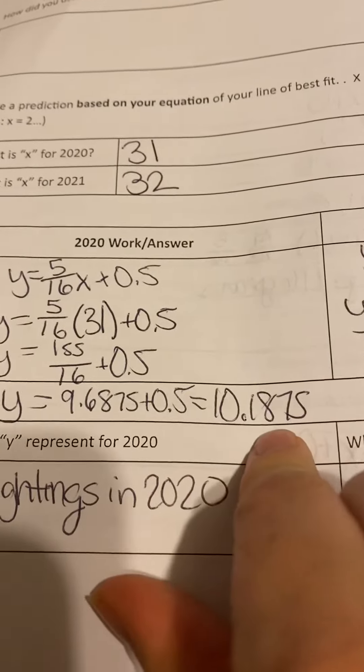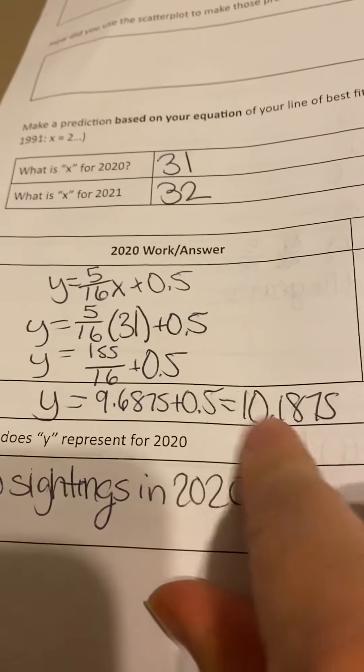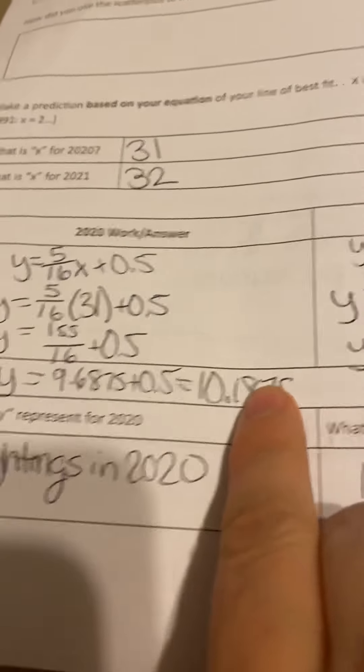And so you could estimate based on your equation that you would have about 10.2 sightings in 2020 for my made up state.